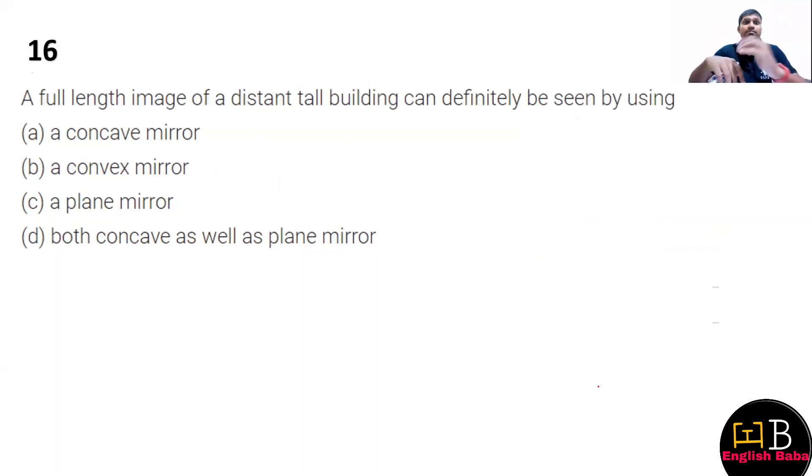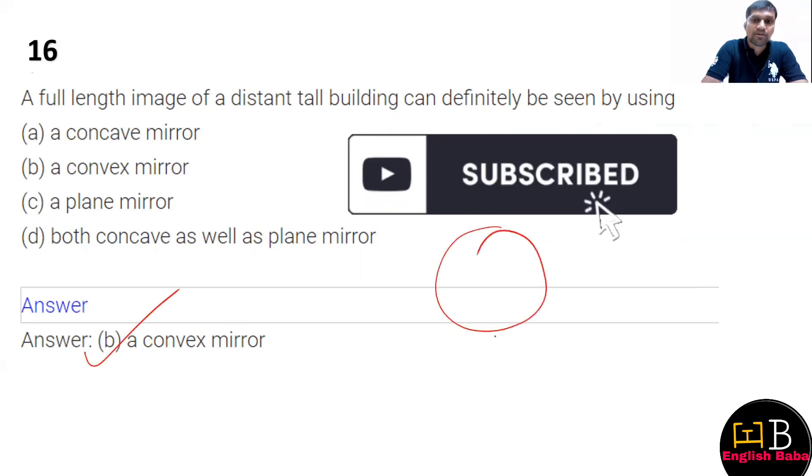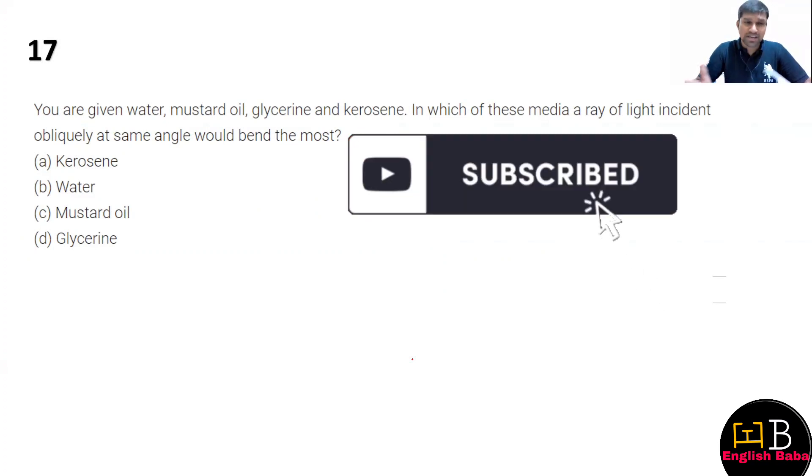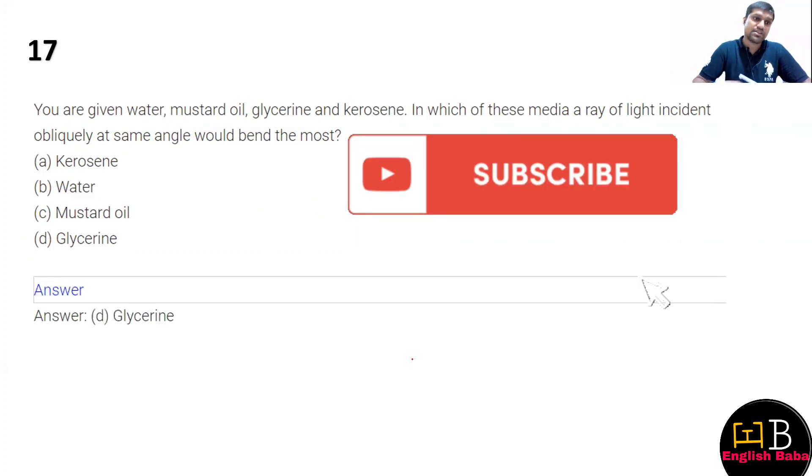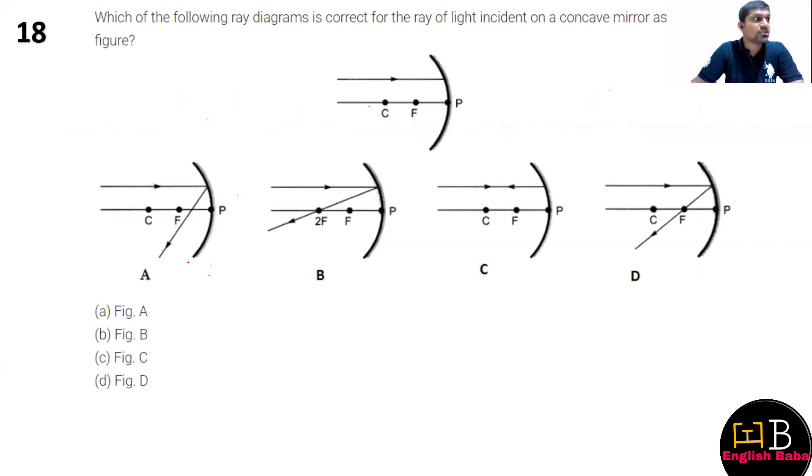Next question: full length image of a distant building can be definitely seen by using - obviously you will require a convex mirror, which is used in traffic lights and traffic areas. Next, you are given water, mustard seed, glycerin, or kerosene - in which will refraction be maximum? Glycerin, because it is the most dense, so it will refract the most rays. So option D is correct here.